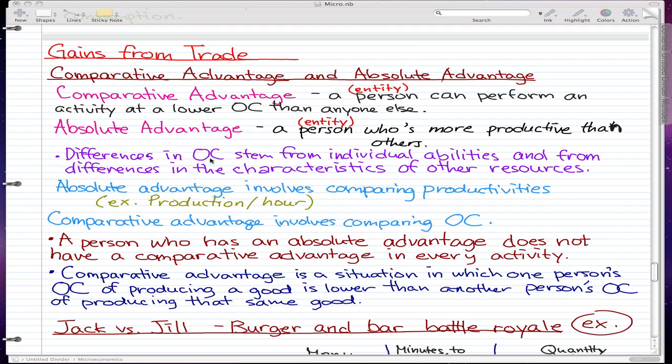Differences in opportunity cost stem from individual abilities and from differences in the characteristics of other resources. A good example would be comparing countries. Different countries have different kinds of resources, which is why they have different opportunity costs—because they have resources that some other countries don't have, and people with abilities that other countries do not have.